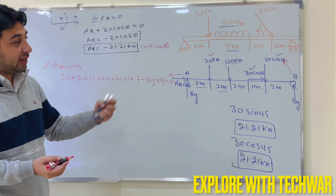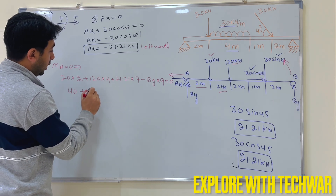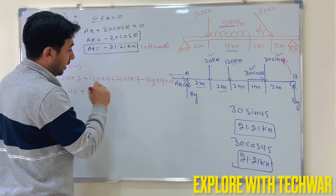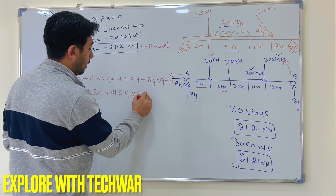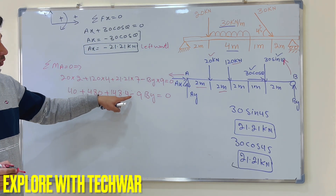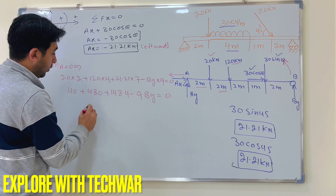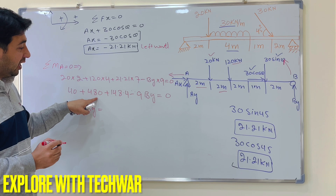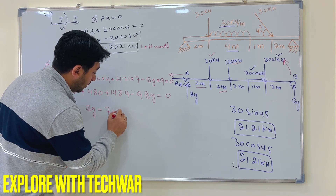Simplifying the moment equation: 20×2 = 40, plus 120×4 = 480, plus 21.21×7 = 148.4, minus 9·By = 0. So 40 + 480 + 148.4 = 9·By, and By = 668.4 ÷ 9 = 74.2 kilo newtons.